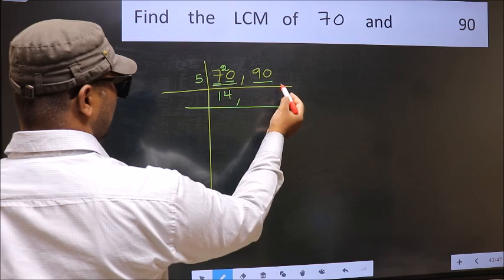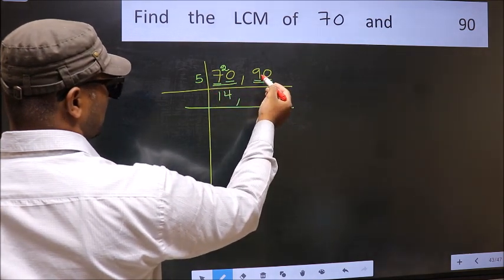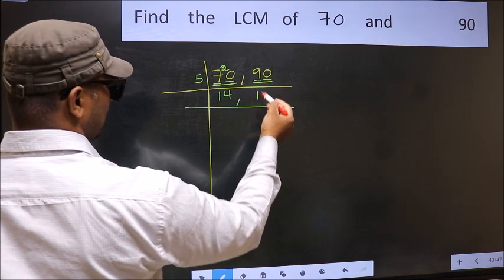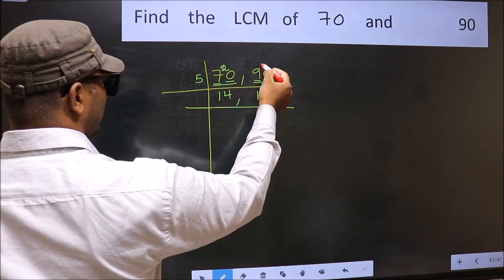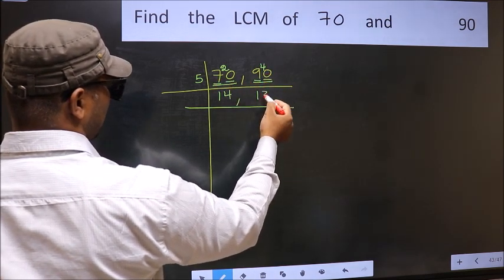Now the other number 90. Last digit is 0, so this is divisible by 5. First number 9. A number close to 9 in the 5 table is 5 once 5. 9 minus 5 is 4, 4, carried forward 40. When do we get 40 in the 5 table? 5, 8, 40.